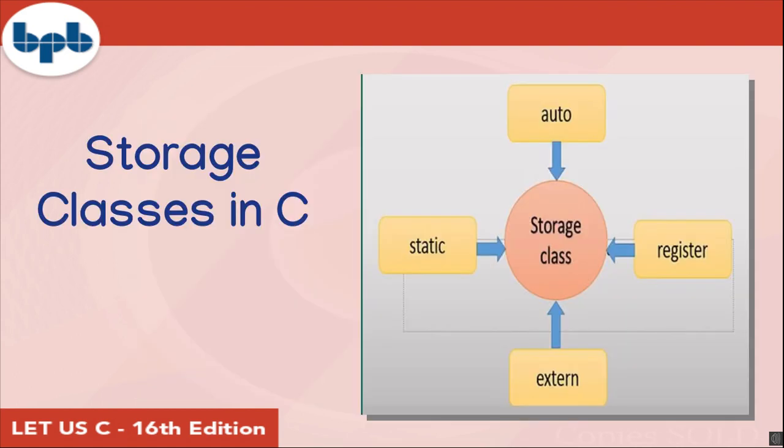A storage class defines the scope and lifetime of variables or functions within a C program. They precede the type that they modify. We have four different storage classes in a C program: auto, register, static and extern. You learn about each storage class in the book with illustrated examples.